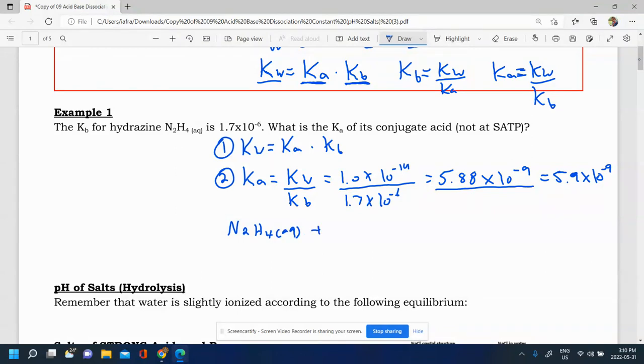So it's a base. And this is not part of the problem, I'm just showing you where this relationship comes from. I'm going to mix it with water. And so if it's a base, it's going to accept a proton. So I'll get N2H5 plus aqueous plus OH minus.